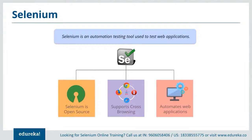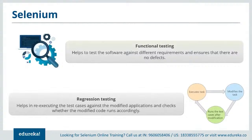The most commonly used language with Selenium is Java because of its user-friendly behavior. Selenium is free of cost — users do not have to pay for any version of this tool. The latest version available is Selenium 3.1. Selenium is highly flexible when it comes to functional and regression testing. Functional testing tests the software against business requirements to ensure no defects, and regression testing re-executes tests against a modified application.